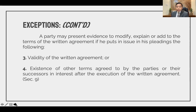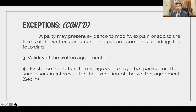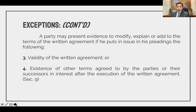Third, if the issue is the validity of the written agreement — if there is an issue regarding its validity — then you can present extrinsic evidence. Fourth, existence of other terms agreed to by the parties or their successors in interest after the execution of the written agreement. So if there are other terms agreed upon by the parties after the written agreement was executed, then extrinsic evidence can be presented.